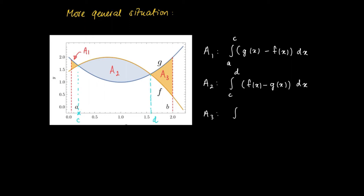And A3 gives the remaining integral, so we get A3 equals the definite integral from d to b of g(x) minus f(x).